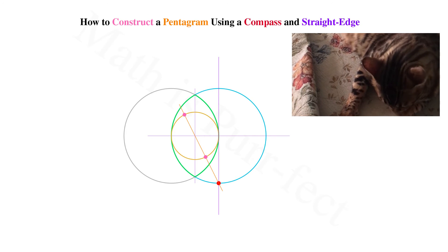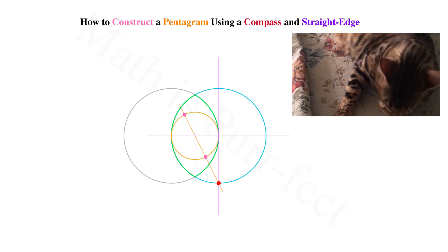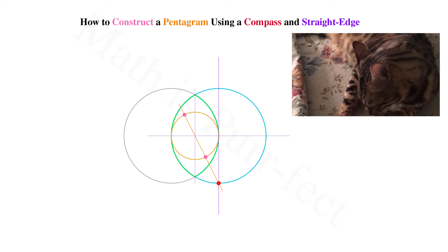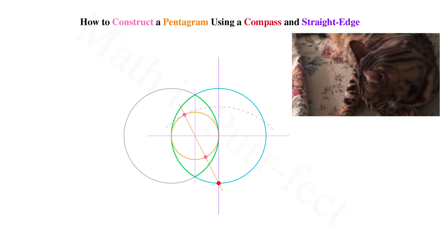Placing the point of the compass back down at the red dot, where the circle bisector meets the circumference on the bottom, we then open the compass to the width of the farther pink dot and draw an arc at that radius through both sides of the original circle.